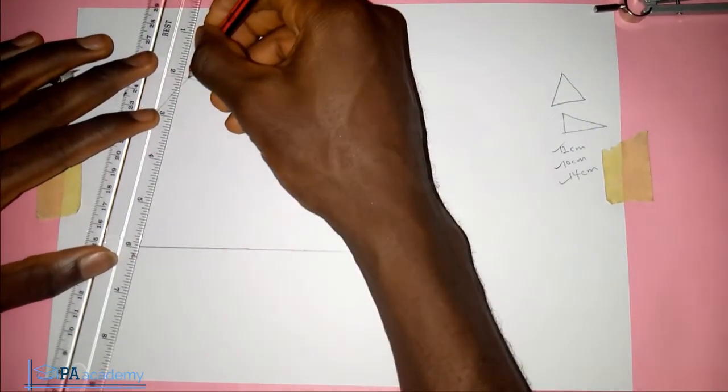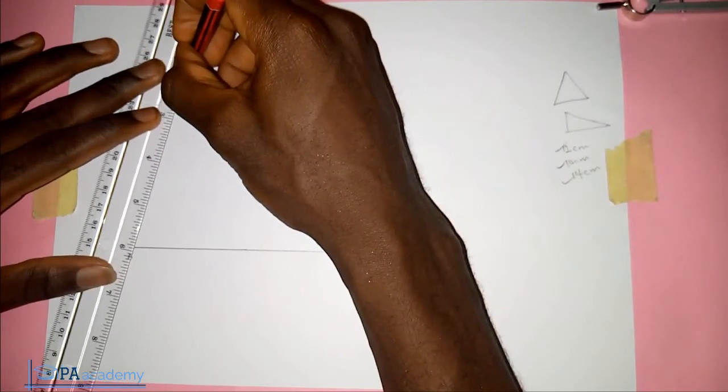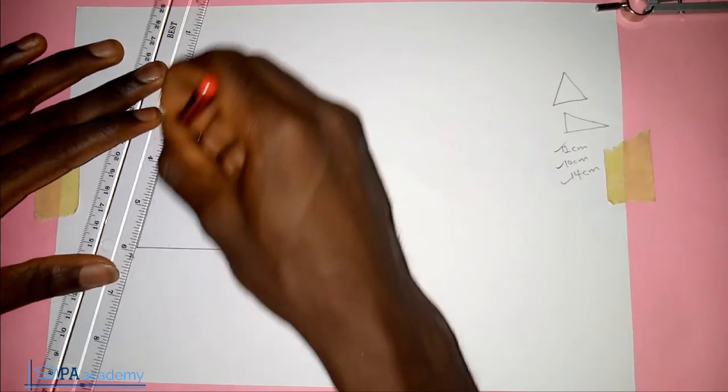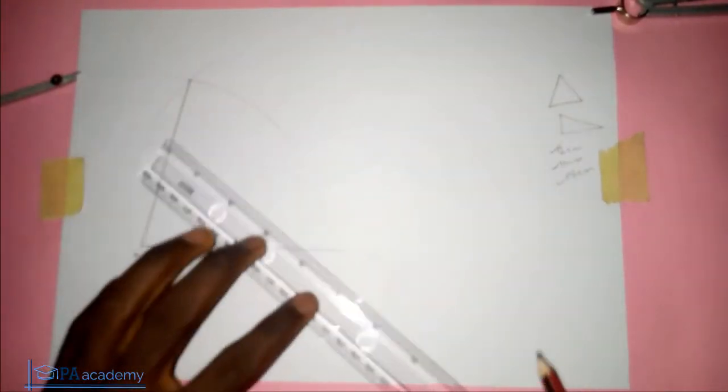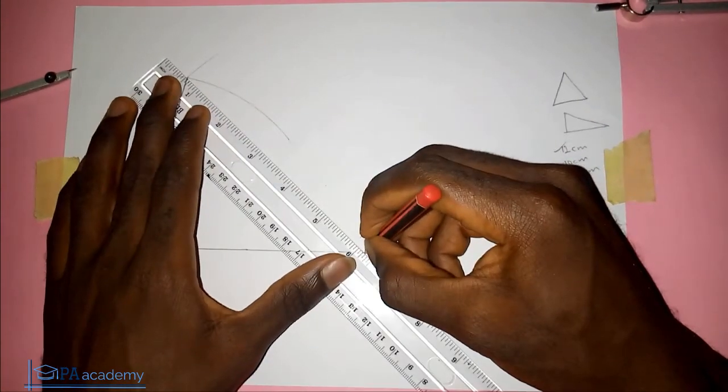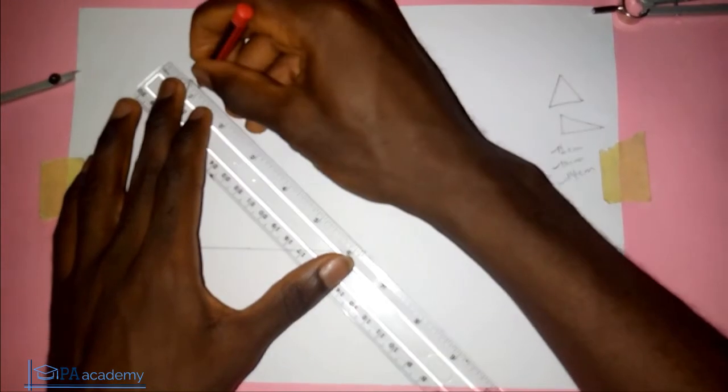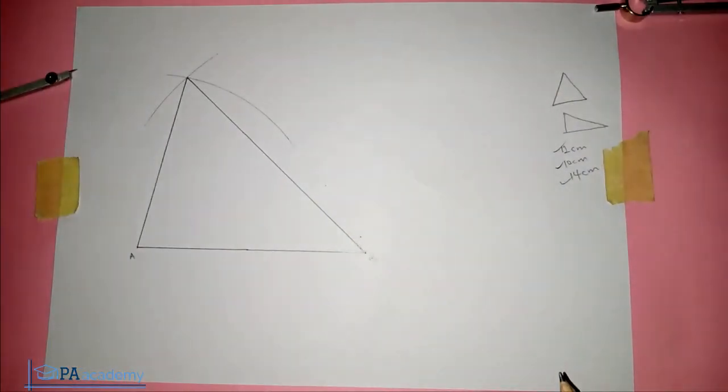So you draw a straight line down to point A, and to point B. And this is how you get your triangle when you are given the three lengths.